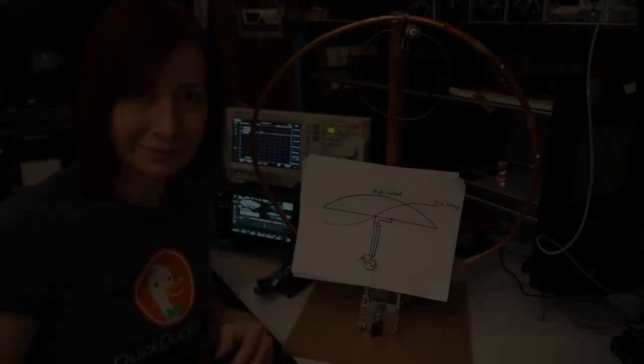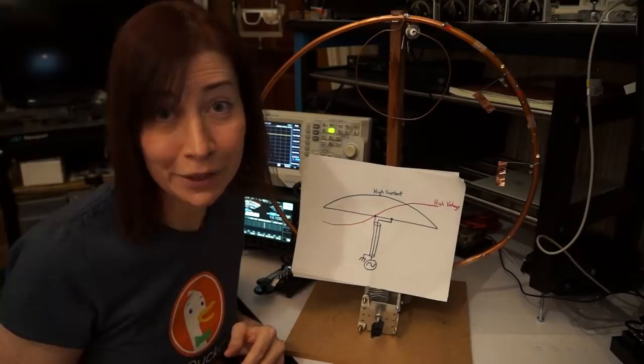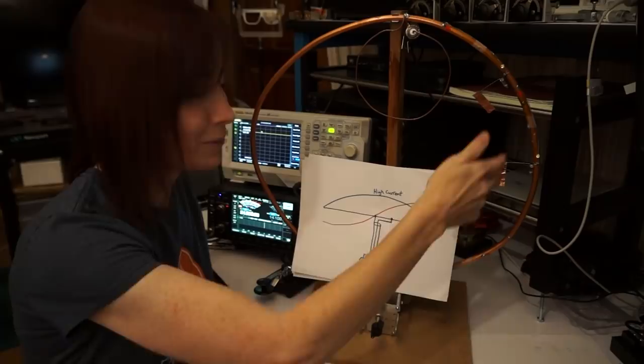Hi everyone. Today I put together this adorable miniature mag-loop antenna. It's so cute and likely very inefficient, but it serves a purpose. It's going to allow me to show the current and voltage distribution around a mag-loop antenna, and I've added some instrumentation to it so that we can see in real time what's going on.